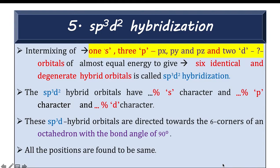But what we have to find out is which 2d orbitals will intermix giving rise to 6 identical and degenerate sp³d² hybridization.